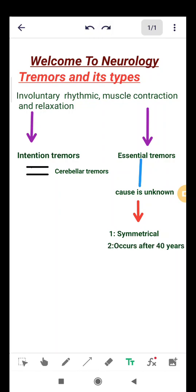It occurs after 40 years, usually in older patients. It is treated commonly by beta blockers. The cause of essential tremors is unknown; it's idiopathic.